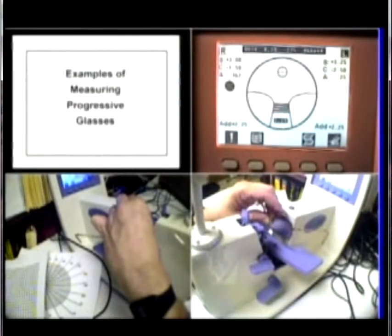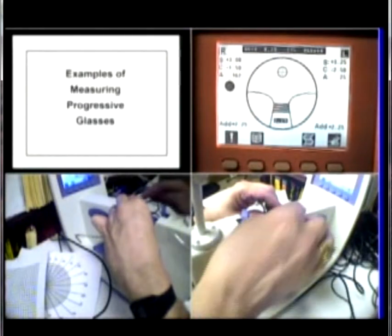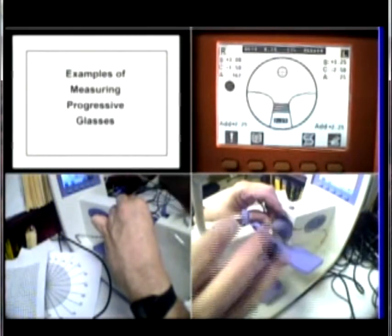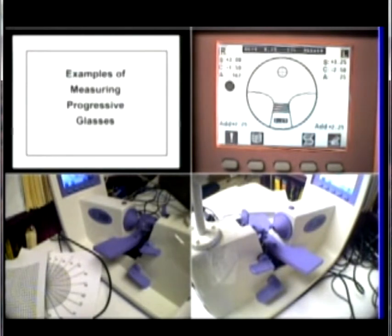You can go to the quad mode. I'm going to reach across and press the memorize button. And now I've got a measurement for the right and the left eye.